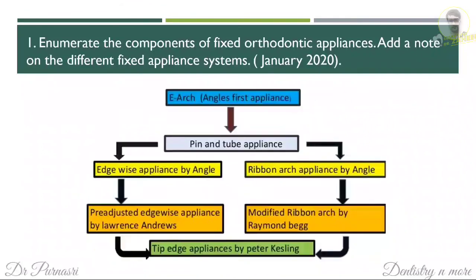For the note on different fixed appliance systems: the first appliance system given by Angle is the e-arch, then the pin and tube appliance. Based on the pin and tube, Angle made the edgewise appliance and also the ribbon arch appliance. Based on the edgewise appliance, Andrews modified it into the pre-adjusted edgewise appliance. Begg modified the ribbon arch appliance to make the Begg appliance. Combining these two, Kesling developed the tip edge appliance.